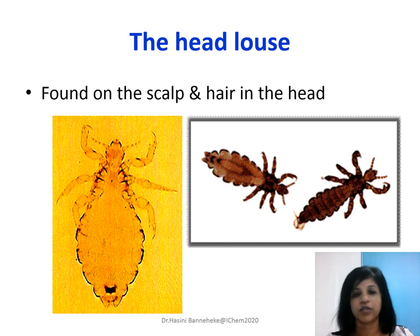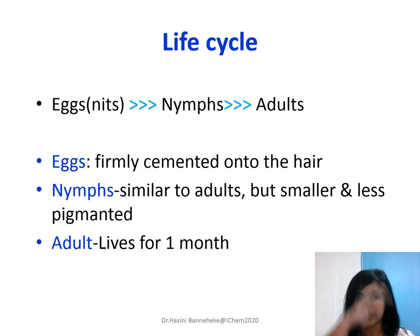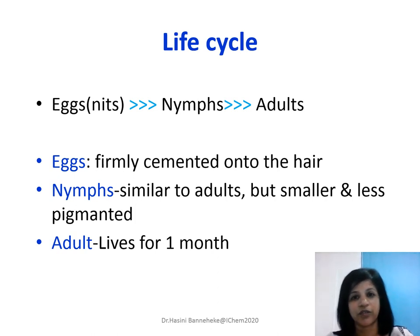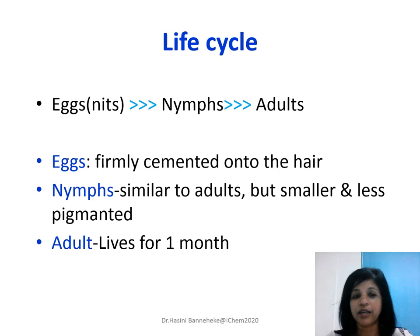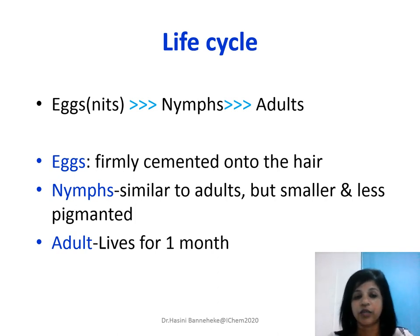We will start off with the head lice — the ones we all know which are on the scalp and on the hair of the head. They have a life cycle: eggs, which hatch and release nymphs. These are look-alike smaller versions of the adult and they grow into the adult. So there are three stages in the life cycle: eggs, nymphs, and adults.